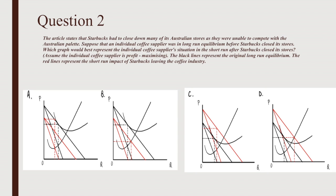Question 2: The article states that Starbucks had to close many of its Australian stores as they were unable to compete with the Australian palate. Suppose that an individual coffee supplier was in long-run equilibrium before Starbucks closed its stores. Which graph best represents the individual coffee supplier's situation in the short run after Starbucks closed its stores? Assume the individual coffee supplier is profit maximizing. The black lines represent the original long-run equilibrium; the red lines represent the short-run impact of Starbucks leaving the market.